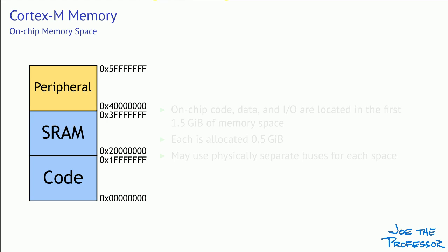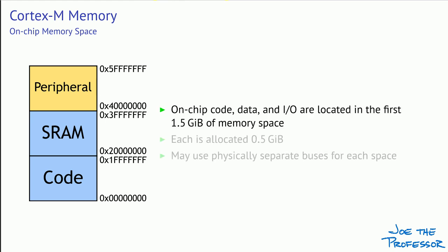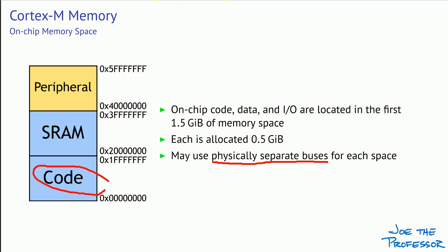You'll probably be most concerned with that part of the memory space that's on chip. Most of the microcontrollers we use will have the really important stuff all on chip. Note that three segments of the memory space — code, SRAM (static RAM), and the peripheral space — are located in the first one and a half gibibytes of memory space, each allocated half a gibibyte, even though it may use much less than that. Even though these appear to the programmer as the same memory space, they may use physically separate buses, which means we can be fetching instructions from code at the same time we're fetching data from RAM or working with peripherals.